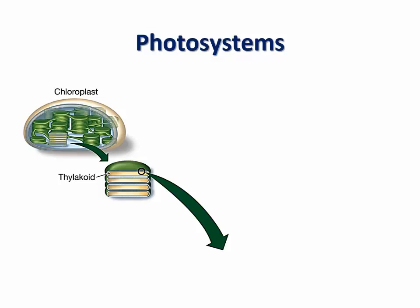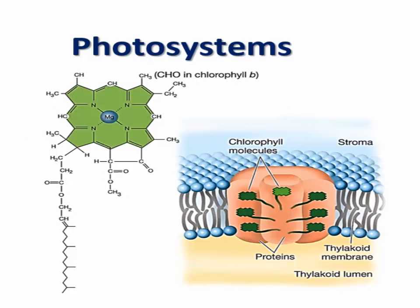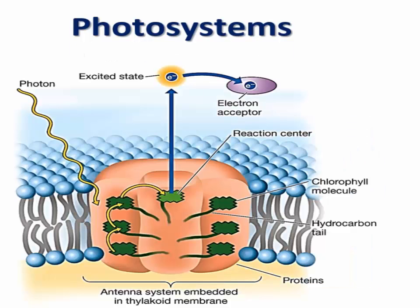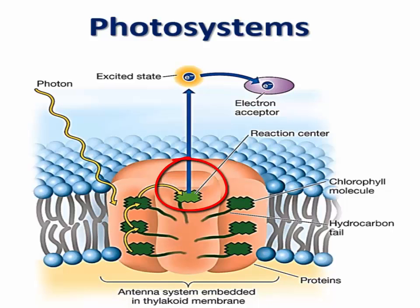In plants, chlorophyll is found in the thylakoid membranes of chloroplasts. If we zoom in on the membrane of these thylakoids, we see that chlorophyll molecules are embedded within a complex system of proteins and other pigments that is collectively known as a photosystem, and the membrane of each thylakoid is packed with these photosystems. Each photosystem unit comprises 200 to 300 chlorophyll molecules and accessory pigments that are complexed with membrane proteins. A typical photosystem consists of two main parts: the antenna complex, which is the light-harvesting component, and the reaction center, which converts light energy into chemical energy.